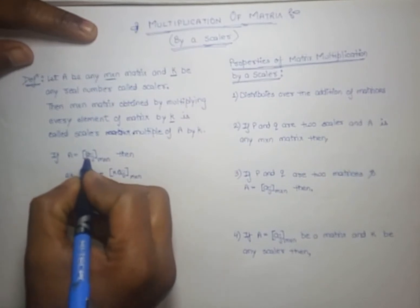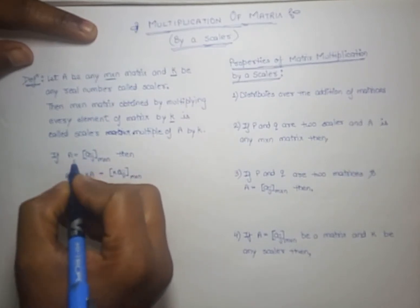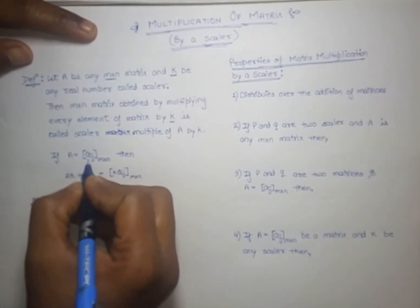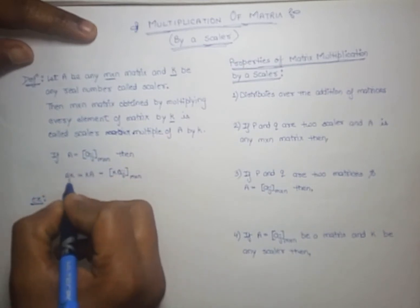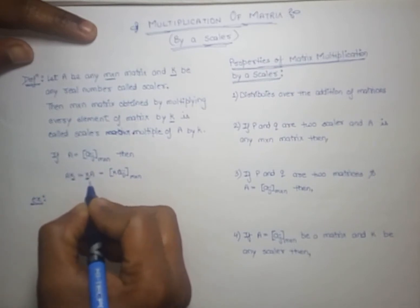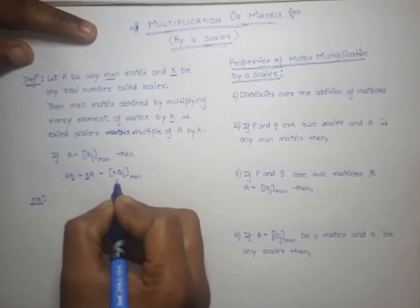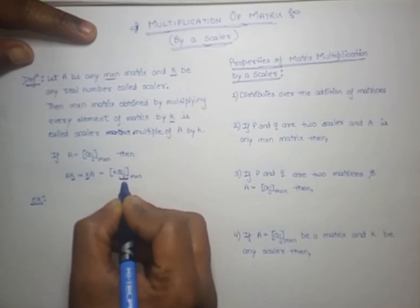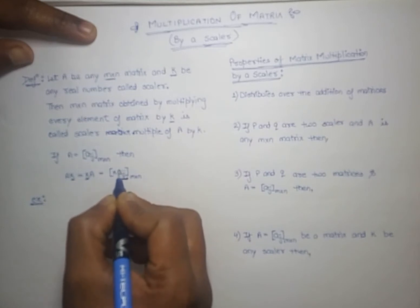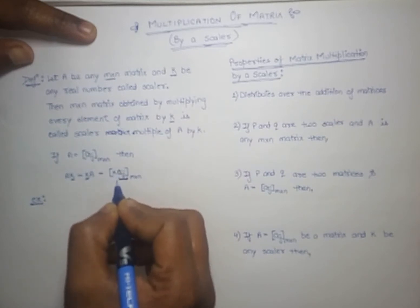Here we have a matrix A whose element is a_ij and its size is m by n. If we want to multiply it with a scalar, what we have to do is multiply each element a_ij with the scalar quantity k.